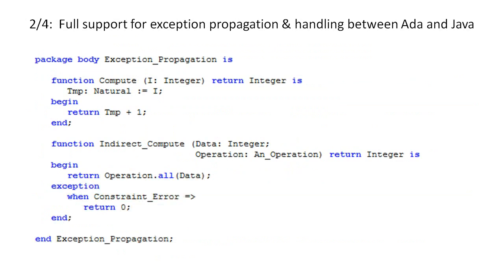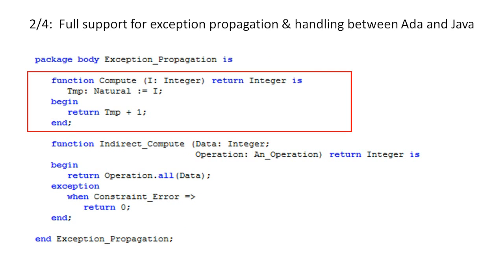In the ADA body, we see that if Java calls compute with a negative value, ADA will raise a constraint error. This is because objects of type natural cannot be negative. However, because compute does not have an exception handler, AGES will cause the exception to be propagated back to the caller — that is, to the Java client — where it is handled.